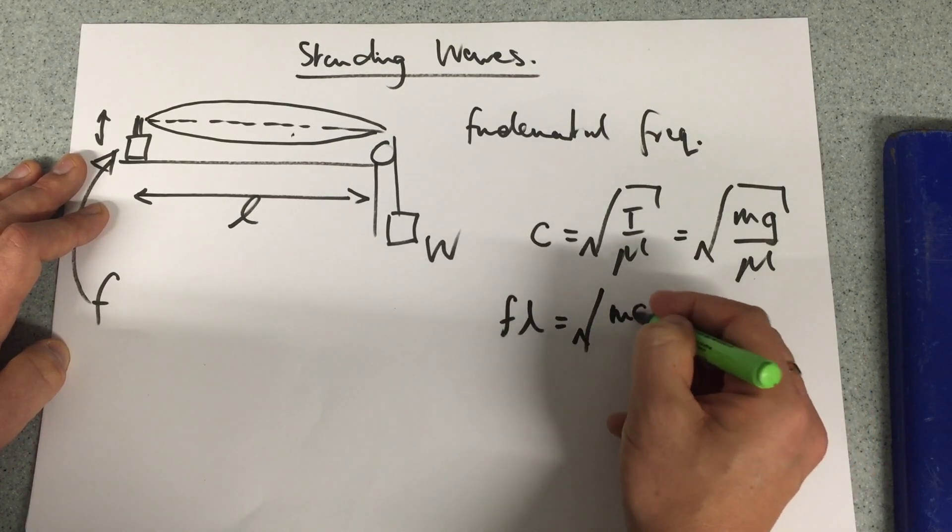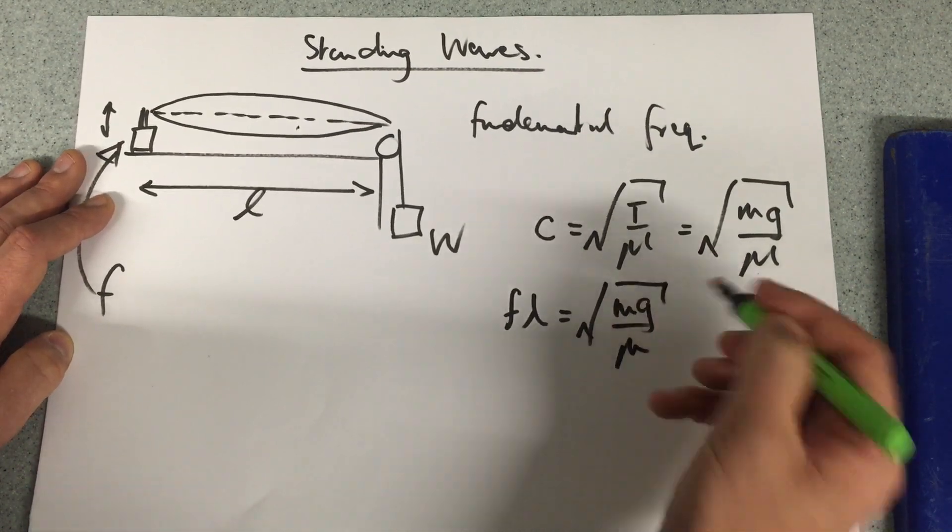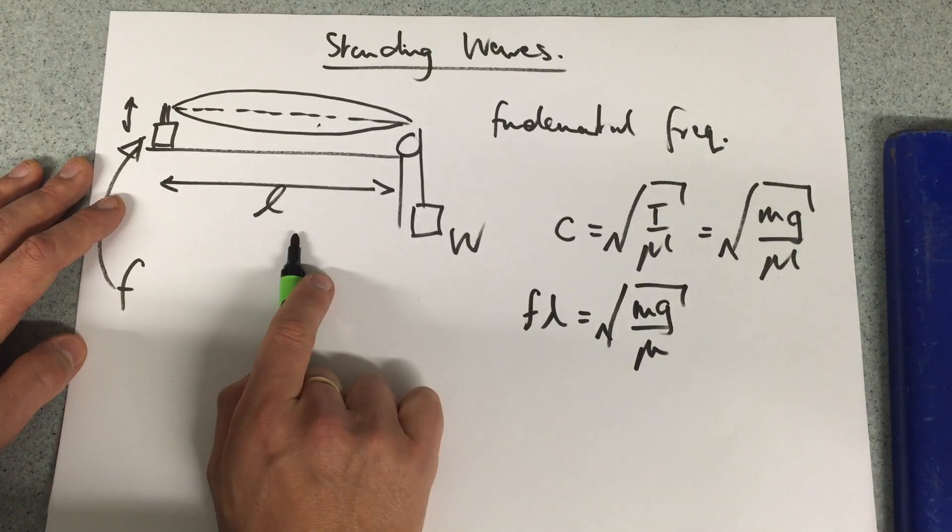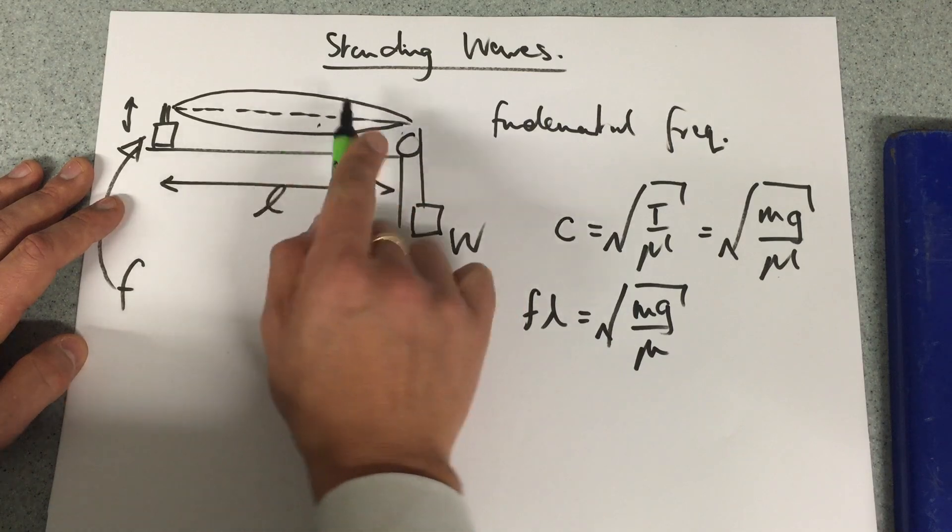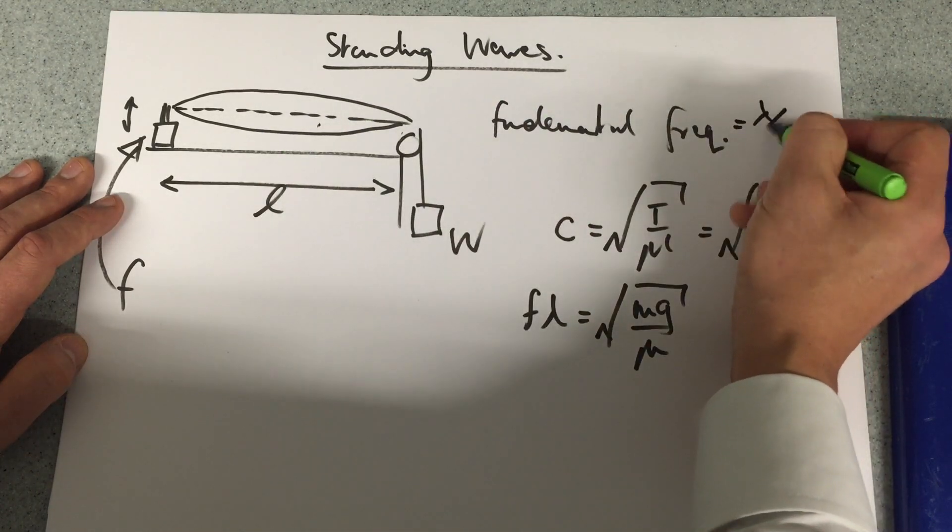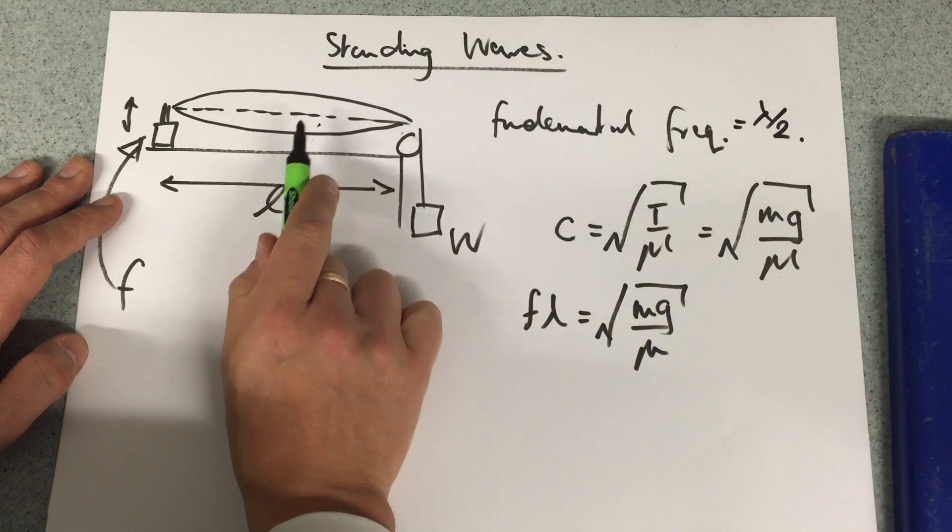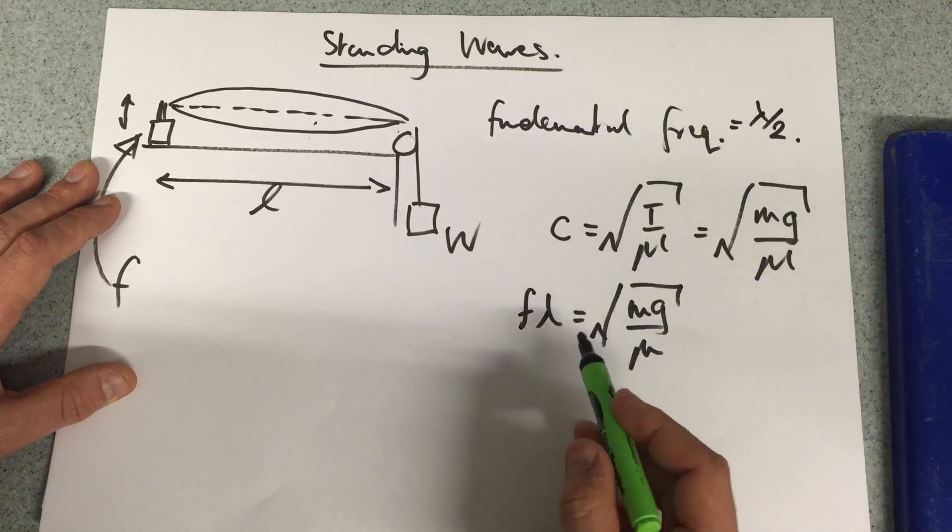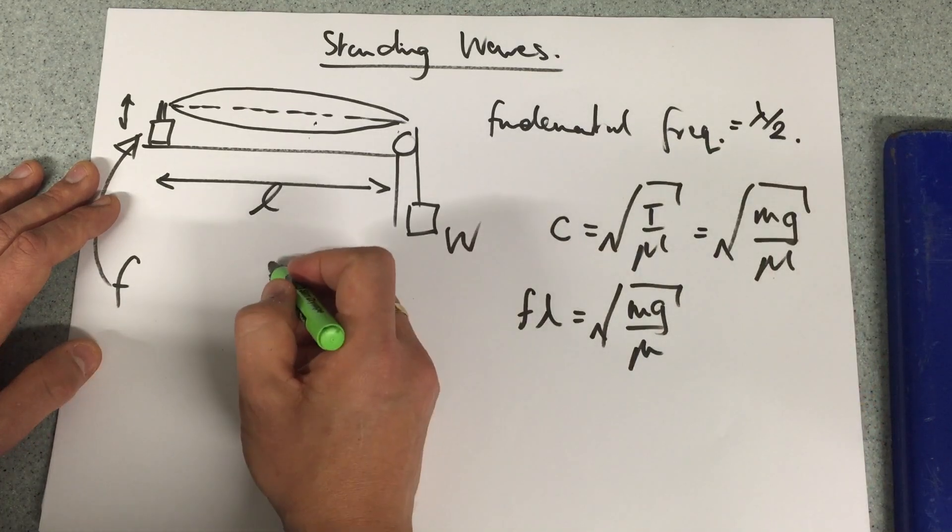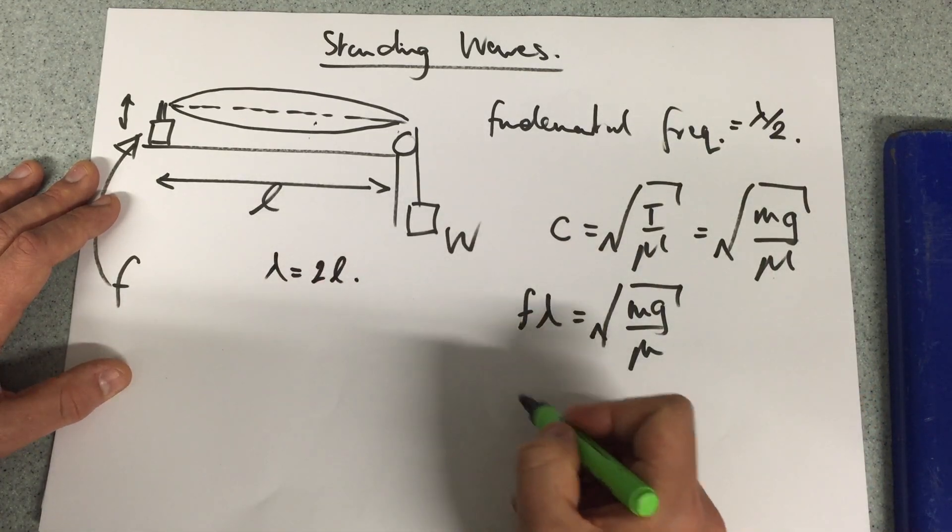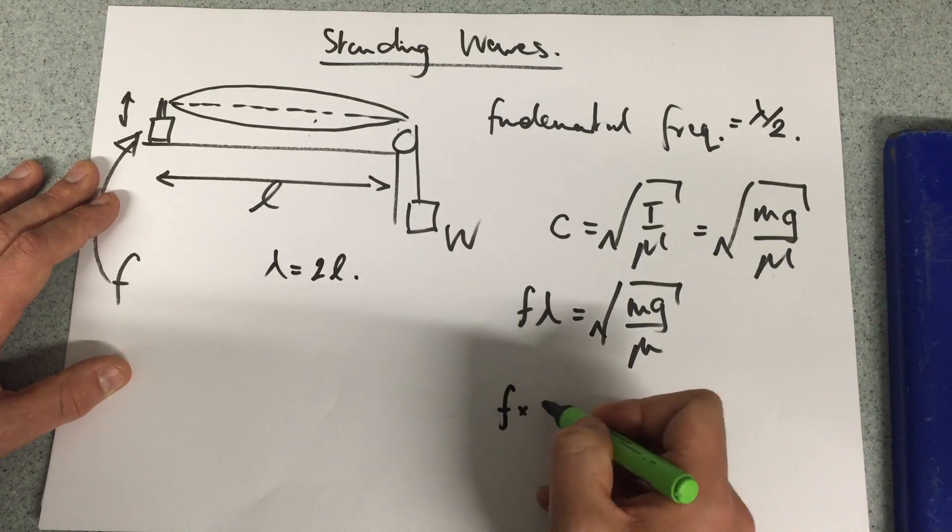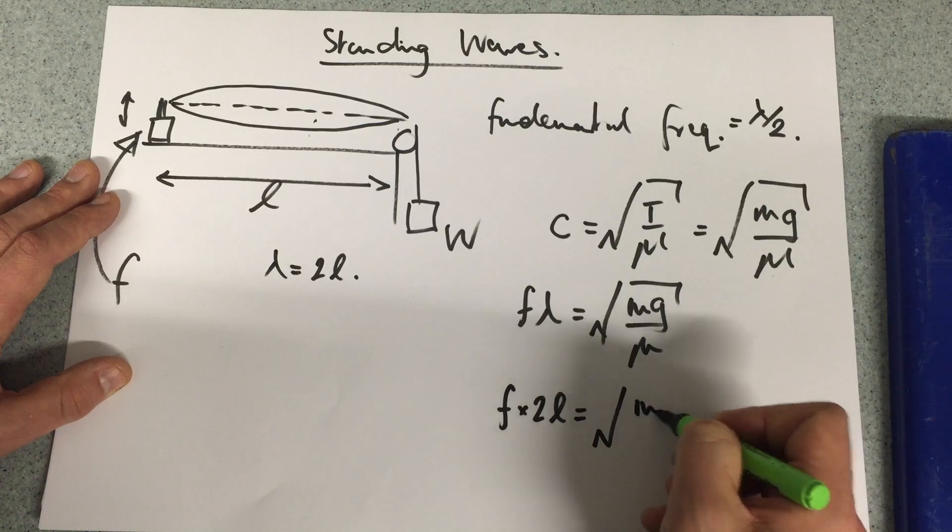So suddenly we have this equation. And how do we relate that to the length? We're looking for this fundamental frequency, which demonstrates half a wavelength on this string. So therefore L is equal to lambda over 2, so lambda is 2L. I could write this as frequency times 2L is equal to the square root of mg over μ.